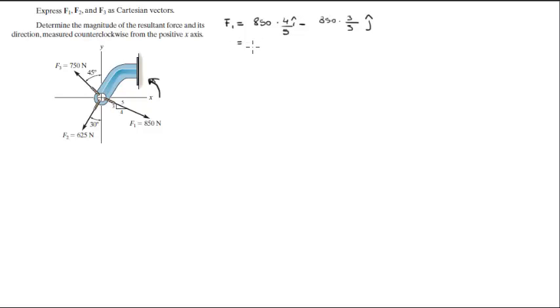When you solve this, you get 680 in the i direction minus 510 in the j direction. That's F1.